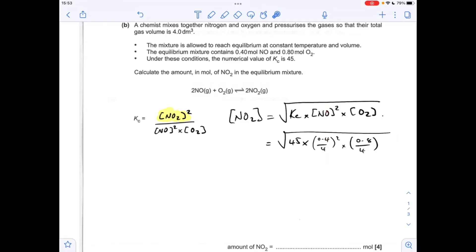So that's why I've divided by 4, moles over volume gives concentration. So the concentration for the NO2 is coming out at 0.3 moles per decimetre cubed.